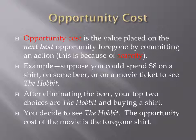For example, suppose you could spend $8 on a shirt, on some beer, or on a movie ticket to see The Hobbit. After eliminating the beer, your top two choices are The Hobbit and buying the aforementioned shirt. You decide to go and see The Hobbit. The opportunity cost of the movie is the foregone shirt.